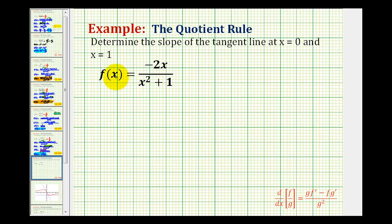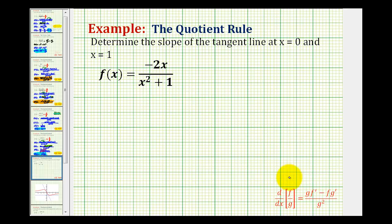We want to determine the slope of the tangent lines at x equals zero and x equals one. To do this, we'll have to determine the derivative function and then evaluate it at x equals zero and x equals one. Since the given function is a quotient of two differentiable functions, we'll need to apply the quotient rule to find the derivative, which is given here in red for reference.